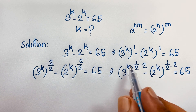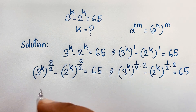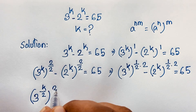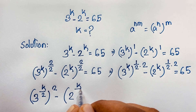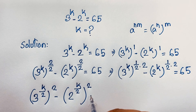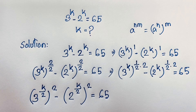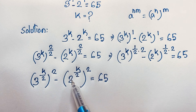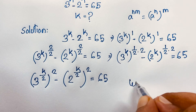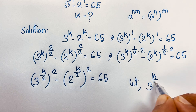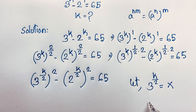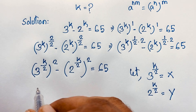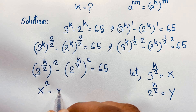So we get 3 to the power (k/2), bracket power 2, minus 2 to the power (k/2), bracket power 2, is equal to 65. Now I let x equal 3 to the power k over 2, and y equal 2 to the power k over 2. So the expression becomes x squared minus y squared is equal to 65.